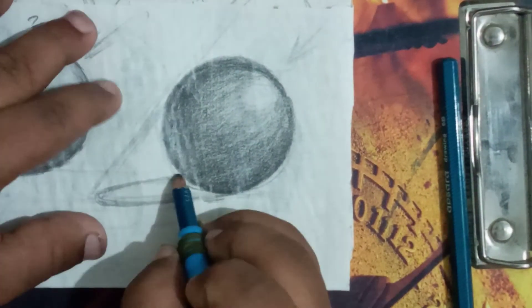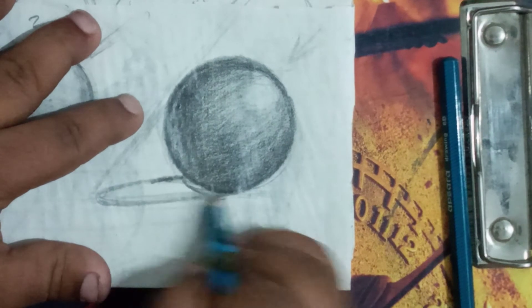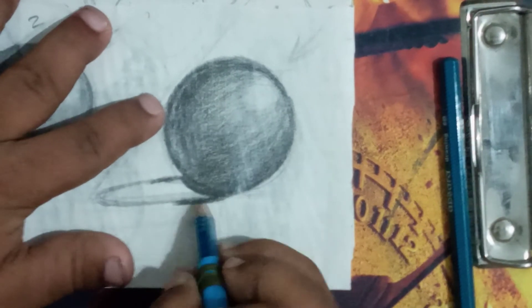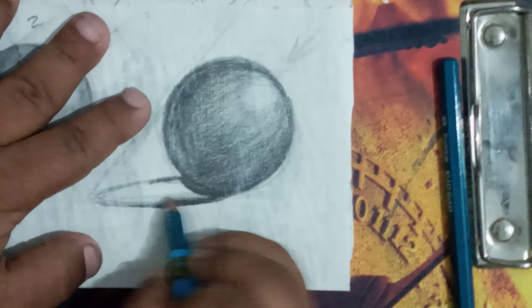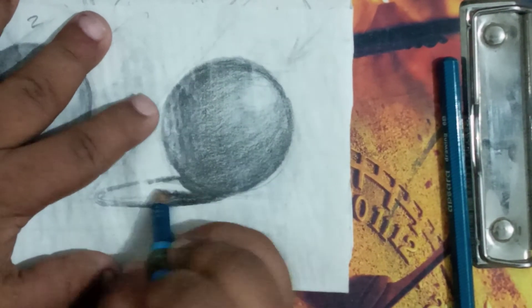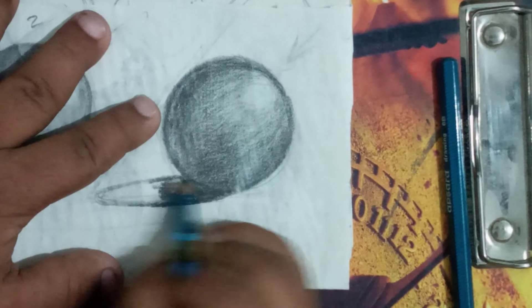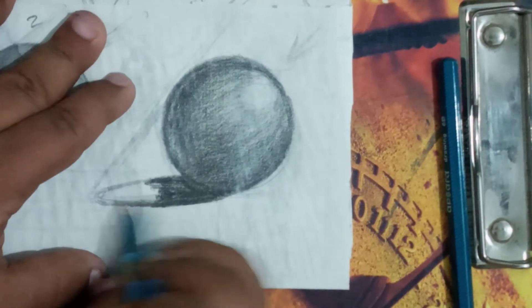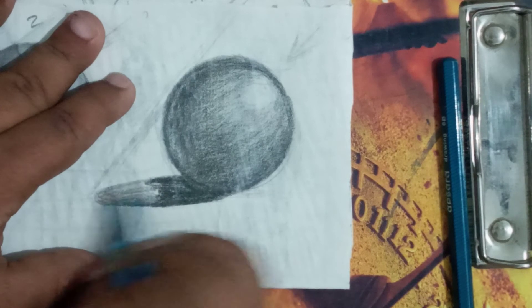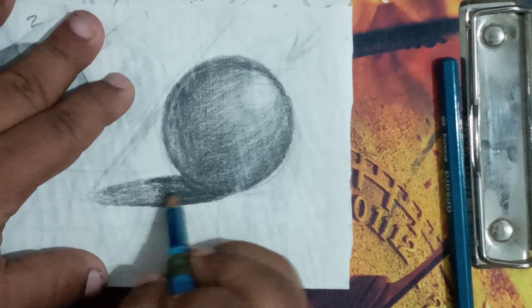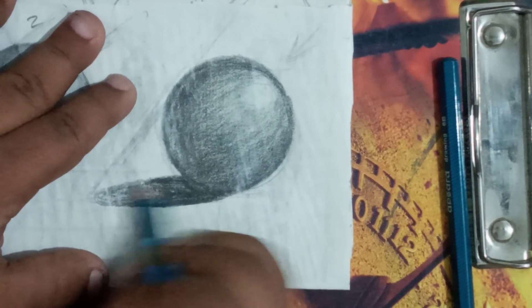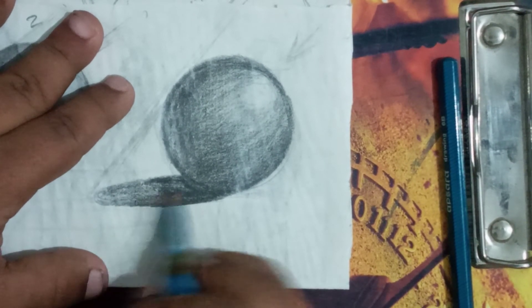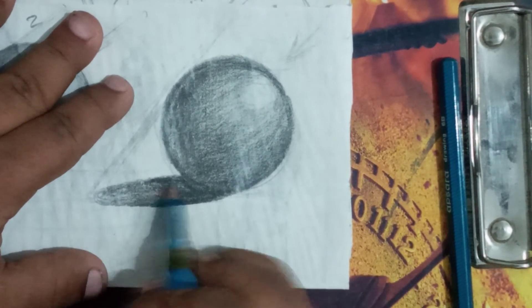Now we are adding shadow. Shadow needs to be very dark near or under the ball, and at the end of the shadow, it's increasing the darkness or decreasing the lightness.